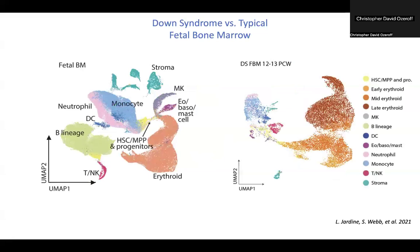As part of Project A, we're going to be analyzing a single cell RNA sequencing dataset from 2021 from L. Hardeen and S. Webb. In this study, the authors used single cell RNA sequencing to categorize the blood cell populations in both typical and Down syndrome fetal bone marrow. They were able to identify a number of lesser known blood progenitor cell intermediates and actually showed a distinct disruption in the erythroid and myeloid cell lineages in the Down syndrome bone marrow.